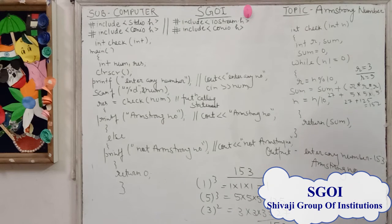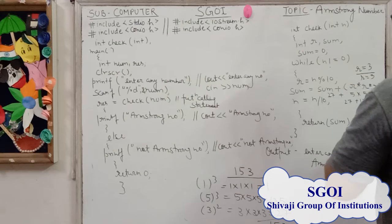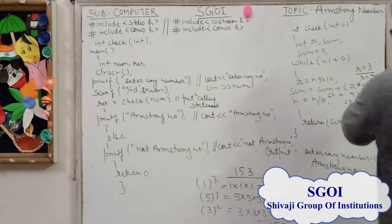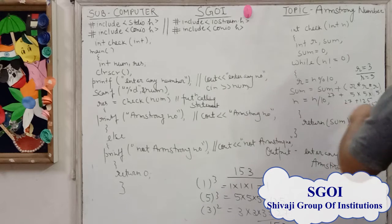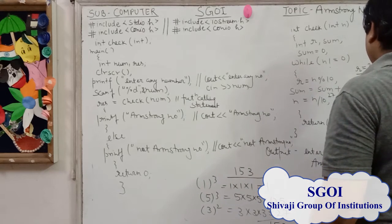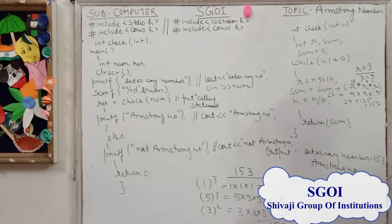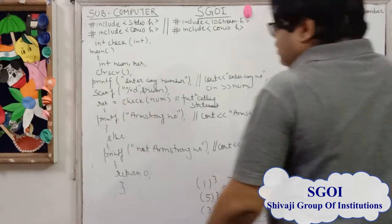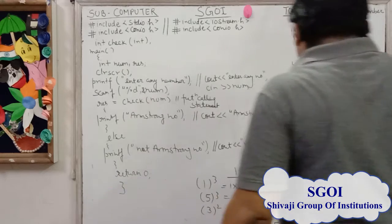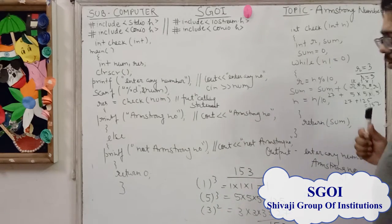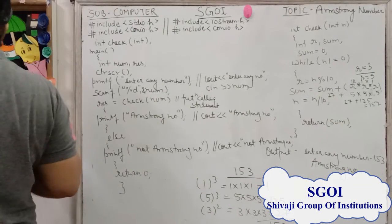1 is not equal to 0. When we find the mod, that is 1. So 152 plus 1*1*1, that is 1, giving 153. Next we find the division, that is 0. Since 0 equals 0, the condition is false and control goes back to the main function. We return sum, and in sum there is 153, which is stored in res. Since 153 equals 153, the number is an Armstrong number. So we find that 153 is an Armstrong number.